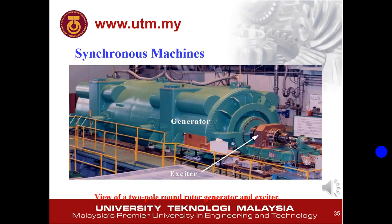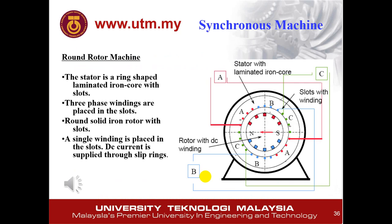Here is a picture of a synchronous generator. For the synchronous machine rotor, you need to know there are two types. The first one is the round rotor — you can see that the rotor here is shaped round, and the wire is circular, placed in the slots. The red one and the blue one are inside the machine. This is a round rotor, and you need to know how to draw it.